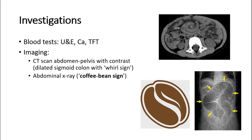CT imaging classically demonstrates a very dilated sigmoid colon with a whirl sign, shown in the upper picture with the white arrow pointing to the whirl sign. Some centers will perform an abdominal radiograph, which will classically show a coffee bean sign arising from the left iliac fossa, shown in the lower picture pointed by the yellow arrows.